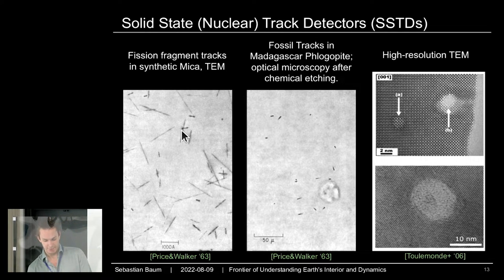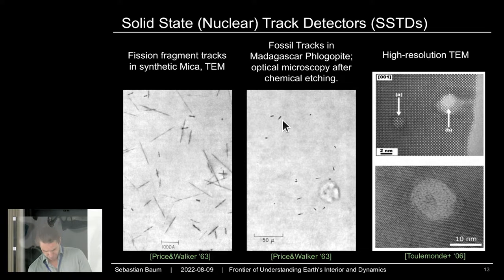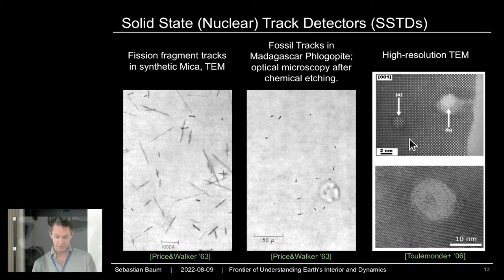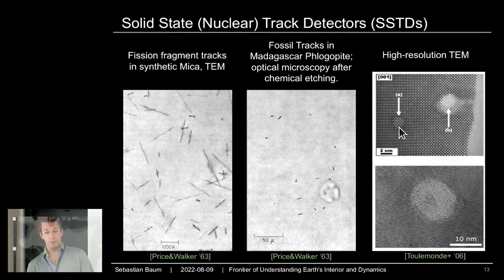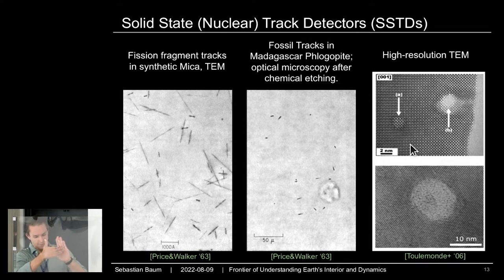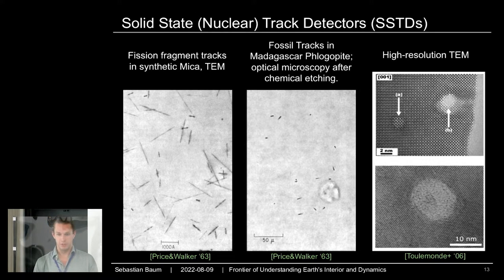Here you see damage tracks being produced and read out with transmission electron microscopy — the scale is something like a micron. After enlarging them by chemical etching, you can read them out even with optical microscopy. With modern technology, you can look at cross-sections of tracks — ions being shot at the sample — and at the nanometer scale you can resolve these features and see exactly how these tracks look.